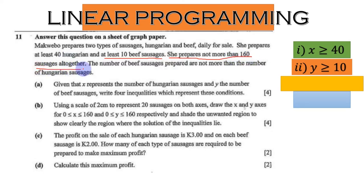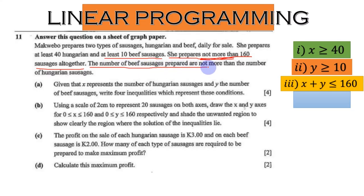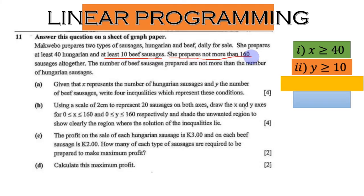Our third inequality: she prepares not more than 160 sausages altogether. x represents Hungarian sausages and y represents beef sausages. When we add these two, the condition is they should not be more than 160. 'Not more than' means less than or equal to, so our third inequality is x + y ≤ 160.